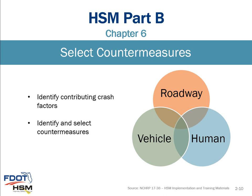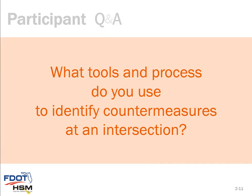The next step, Chapter 6, is to select countermeasures. As the Venn diagram shows, crashes are a combination of factors — roadway, human, and vehicular. It is important to note that the Highway Safety Manual only addresses the engineering side and engineering countermeasures. Enforcement and education are not within the Highway Safety Manual — we are strictly looking at engineering. As you go through this process, you will identify and select countermeasures. The first poll question is: what tools or processes have you used to determine countermeasures for application at an intersection?